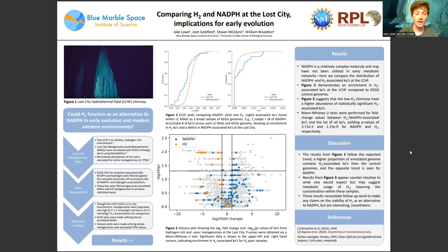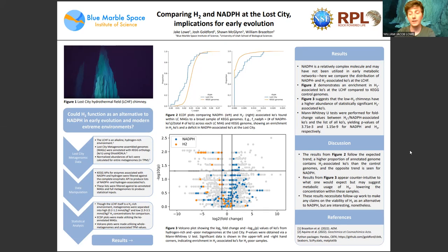To look at this, we had metagenomes and metagenome-assembled genomes from the Lost City hydrothermal field, which had been annotated with KO orthologs. We also have KO APIs for enzymes associated with NADPH and hydrogen function. By comparing these lists, we were able to pull out NADPH and hydrogen-associated KOs from our metagenomes and our metagenome-assembled genomes.